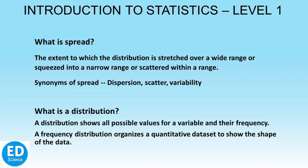Since spread is the extent of distribution, we also need to define distribution. As a statistical function, a distribution shows all possible values for a variable and their frequency, meaning how often they occur. As a statistical method, a frequency distribution organizes a quantitative data set to show the shape of the data. There are different kinds of distributions, the most common of which are probability distributions like normal distribution, binomial distribution, and Poisson distribution.